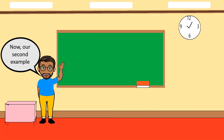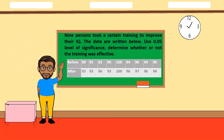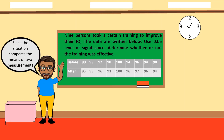Example 2: Nine persons took a certain training to improve their IQ. Using a 0.05 level of significance, determine whether the training was effective. Since this situation compares the means of two measurements — before and after — taken from the same individuals, this is a T-test for paired sample case.